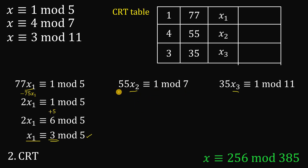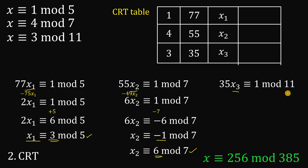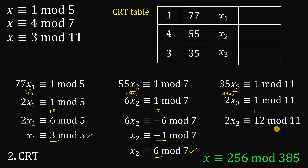For x₂, subtract a multiple of 7 on the left — subtract 49x₂ — giving 6x₂ is congruent to 1 mod 7. Subtract 7 from the remainder: 6x₂ is congruent to negative 6 mod 7. Divide both sides by 6: x₂ is congruent to negative 1 mod 7. Add 7 to make it positive: x₂ is congruent to 6 mod 7, so x₂ equals 6. For x₃, subtract a multiple of 11 on the left, giving 2x₃ is congruent to 1 mod 11. Add 11: 2x₃ is congruent to 12 mod 11. Divide by 2: x₃ is congruent to 6 mod 11, so x₃ equals 6.